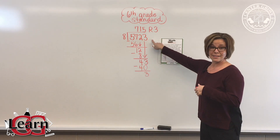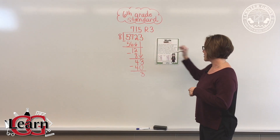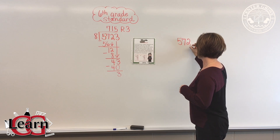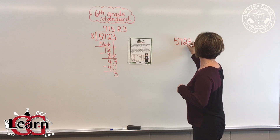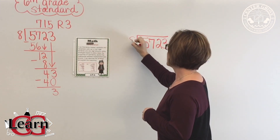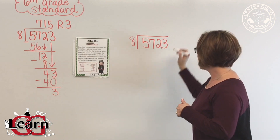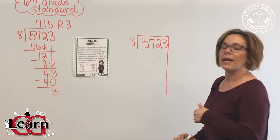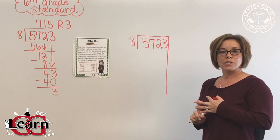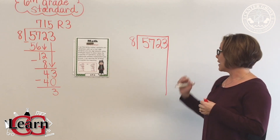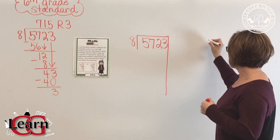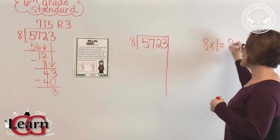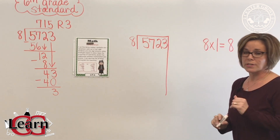My problem is 5,723 divided by 8. For the Fantastic Seven, I'm going to bring my bar down and think of multiples of 8 as basic facts. First I'll go: 8 times 1 is 8, then multiples of ten.